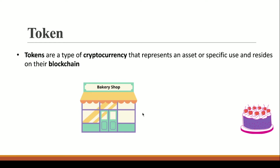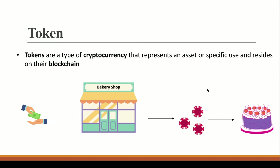So instead of directly providing you the cake, the bakery shop owner gives you some tokens. These tokens can be used to buy anything from the shop. If you want cake, go to the cake counter; if you want a pastry, go to the pastry counter. You provide the money, the owner gives you the tokens, and you use those tokens to buy the cake.